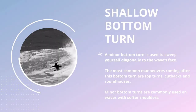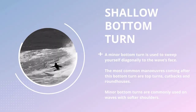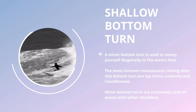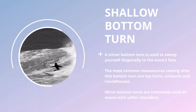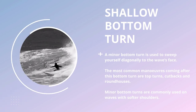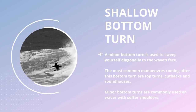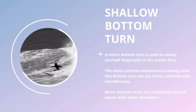A shallow bottom turn is a minor bottom turn. It is used to sweep diagonally to the wave's face. The most common maneuvers coming after this bottom turn are top turns, cutbacks, and roundhouses. Minor bottom turns are commonly used on waves with softer shoulders.